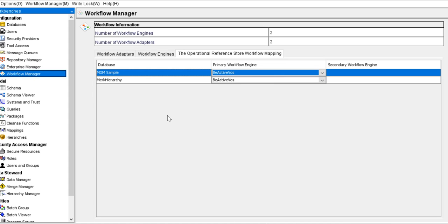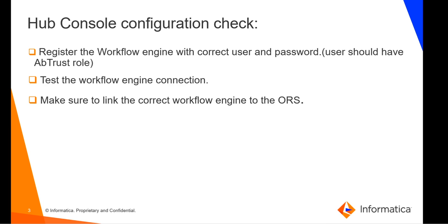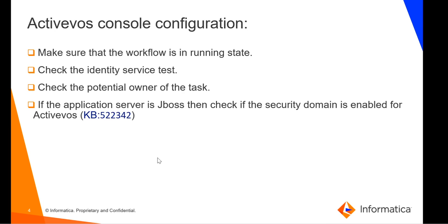These three configurations we need to check in the hub console. Coming to the next point, we need to look at the ActiveOS console configuration. In the ActiveOS console, the first thing: we can see all the E360 tasks only when the task is in the running state in the ActiveOS console.